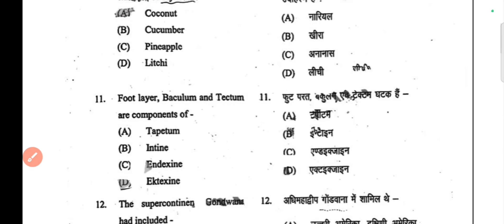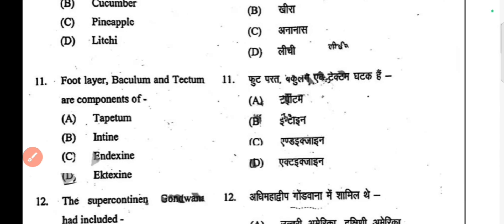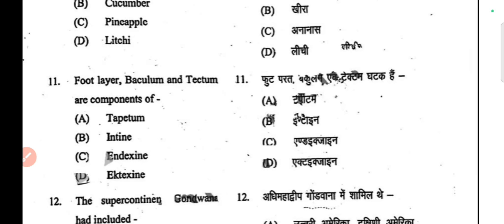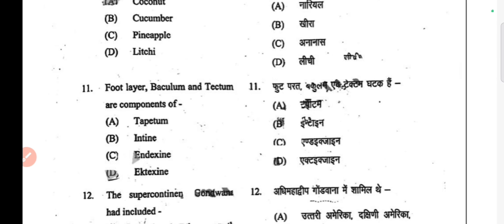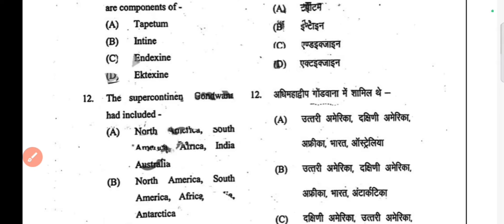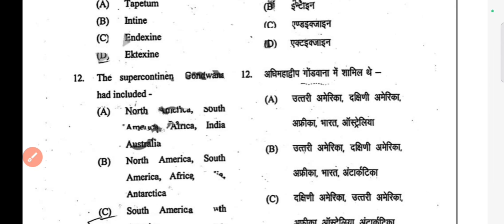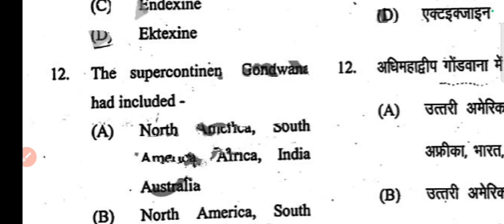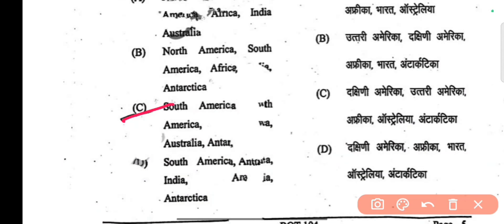Next question: food layer bacillum and tapetum are components of which food layer — the tanked layer component. The correct answer is D. Next question: the supercontinent — groundwater head included — the correct answer is D.